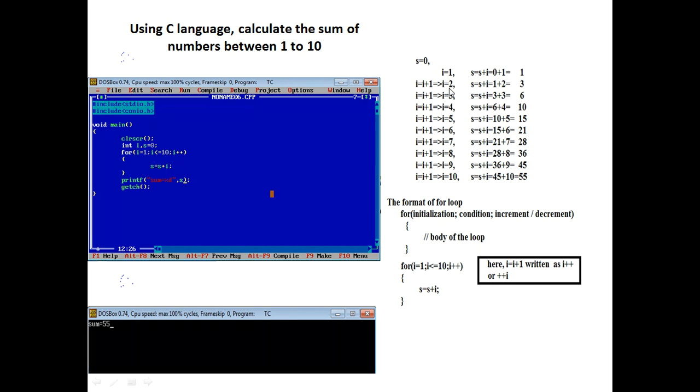And we get the value of 1 plus 2 equal to 3. That is the previous value of s where we find, and then i, 1 plus 2 is 3. Then after that we again increment the value of i, i equal to 3. Then we find that value 3 plus 3 is 6. In this way, I increment value to 10, and we get the value 55.